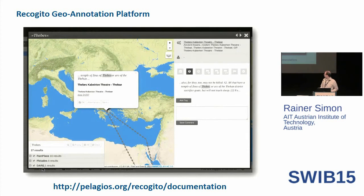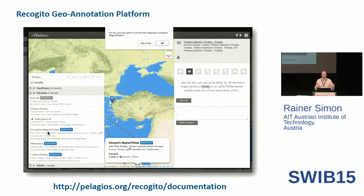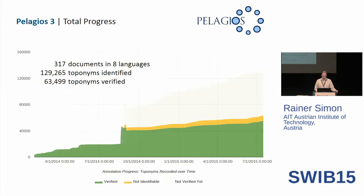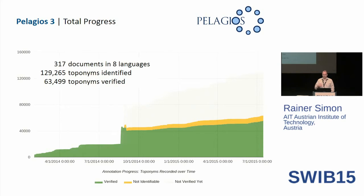If you want to learn more about the tool, there's a beginner's tutorial at the URL shown where you can see how the tool works. Just some quick numbers on output — one criticism is that it's all manual tooling, so how productive are you? In this two-year project, which was spent on both building and using these tools, my colleagues went through 317 documents in eight different languages. They identified almost 130,000 toponyms in maps and texts and hand-verified about half of those. Hand verification is the more tedious process, which is why we didn't reach 100%, but 50% is already quite a high number.